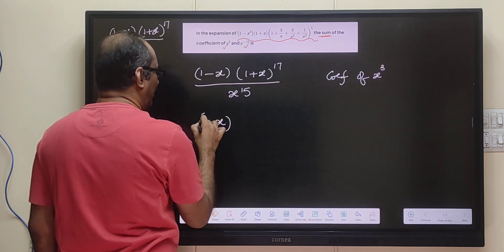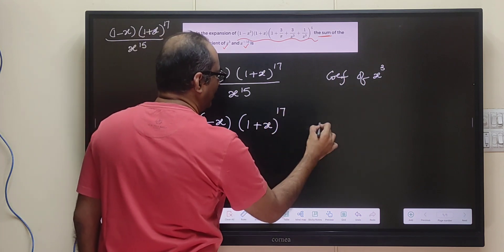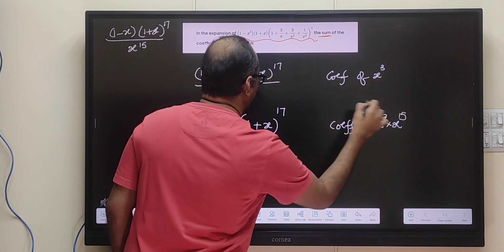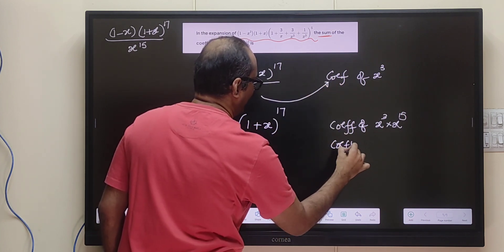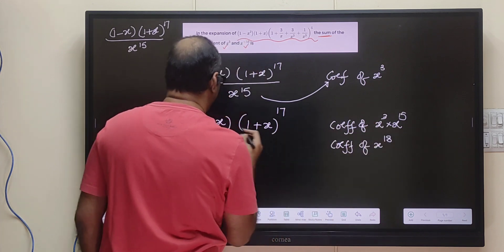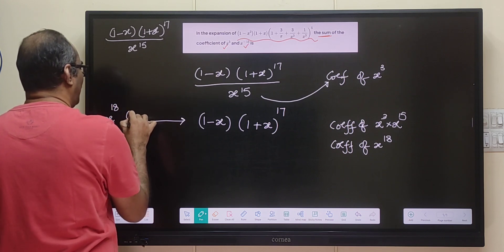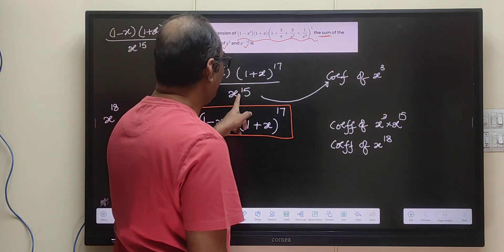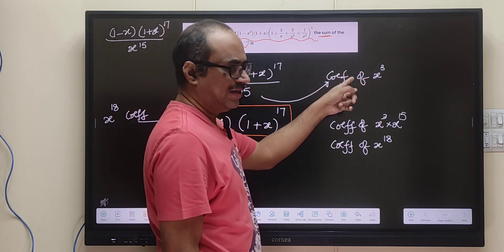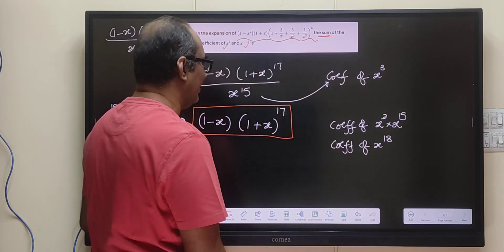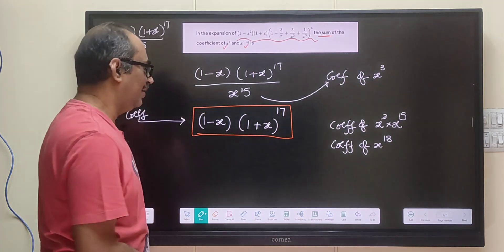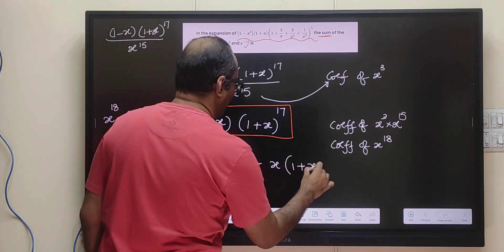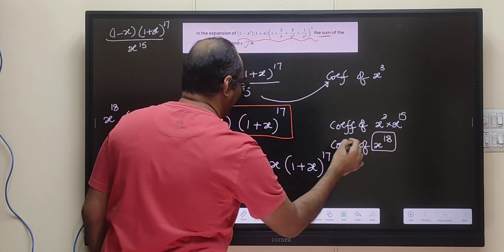Opening (1 minus x) into (1 plus x) to the power of 17, we write it as (1 plus x) to the power 17 minus x into (1 plus x) to the power 17. We need the x to the power 18 term. From the first part, (1 plus x) to the power 17, the maximum power is x to the power 17, so there is no x to the power 18 term. From the second part, x into (1 plus x) to the power 17, the coefficient of x to the power 18 is 1 (from the x to the power 17 term). So the coefficient of x cubed is 0 minus 1, which equals minus 1.